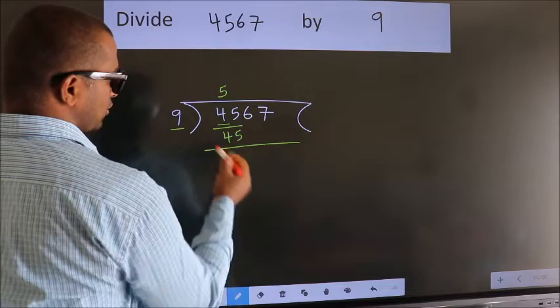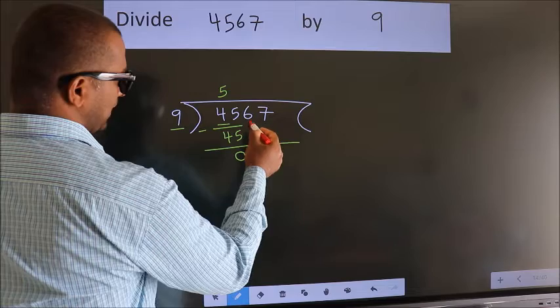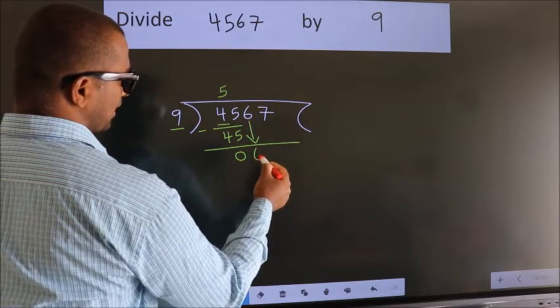Now we should subtract. We get 0. After this, bring down the beside number. So 6 down.